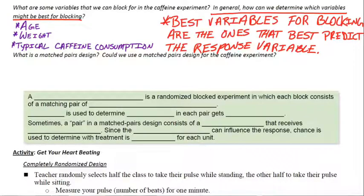If you asked me for a specific one, I'd probably do this one. The typical caffeine consumption. But if everybody's pretty much the same on typical caffeine consumption, then we might want to consider blocking on something else. So that'd be great if we could identify the best predictor of the response variable and we could block on that.